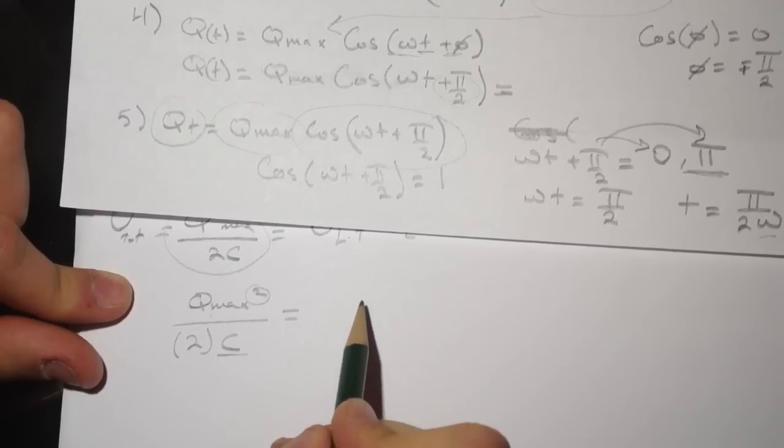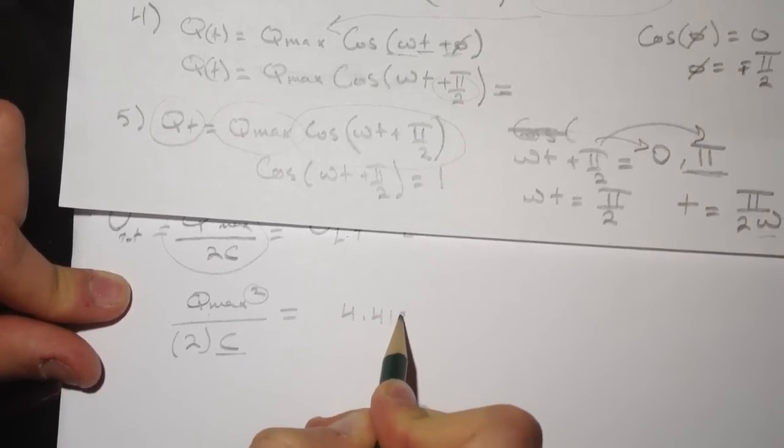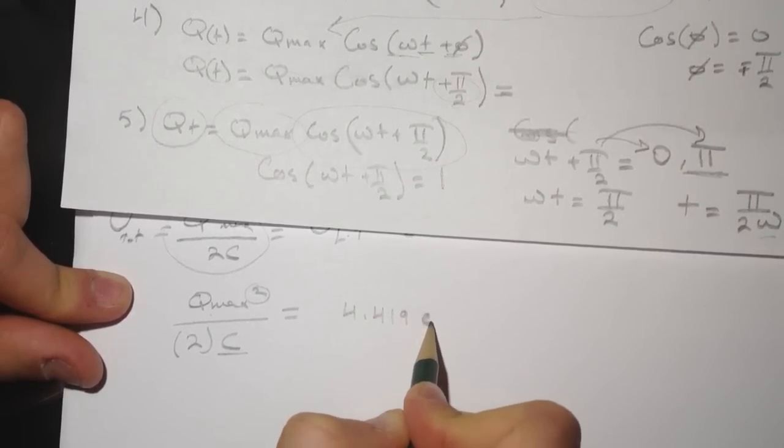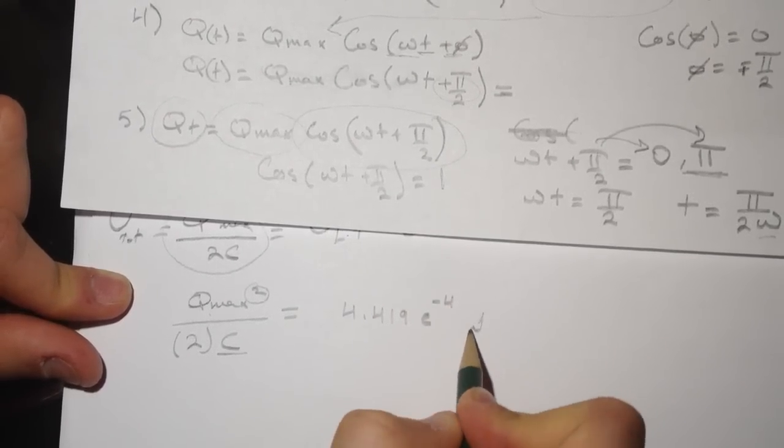Yeah, the number I got for this one was 4.419 e to the negative 4 joules.